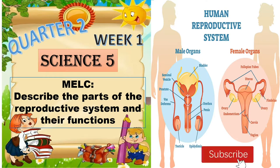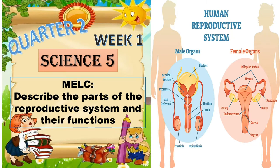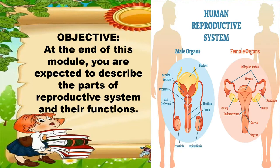Good day, grade 5 students. Welcome to our Q2, Week 1 for Science 5. Our MELC, or Most Essential Learning Competency, is: Describe the parts of the reproductive system and their functions. Our objective: at the end of this module, you are expected to describe the parts of the reproductive system and their functions.